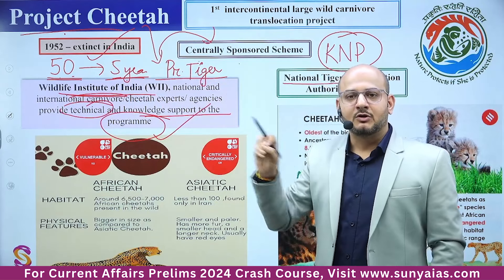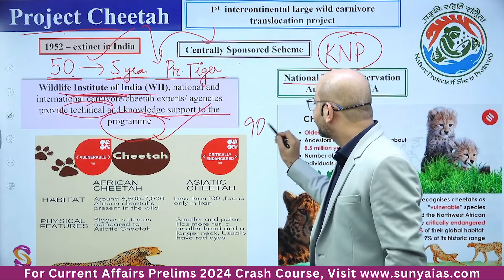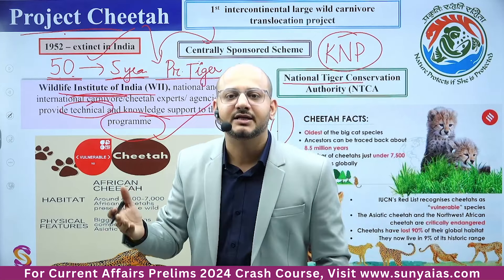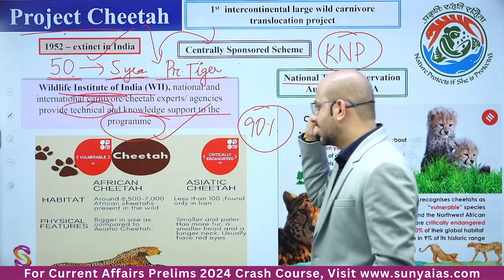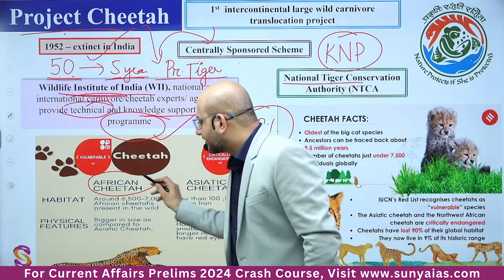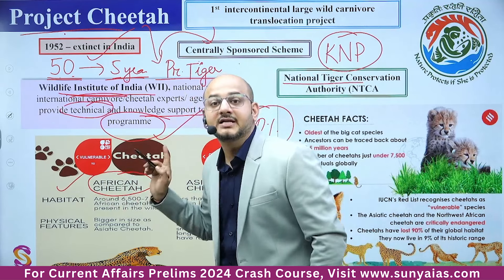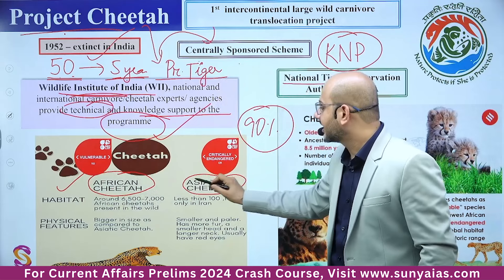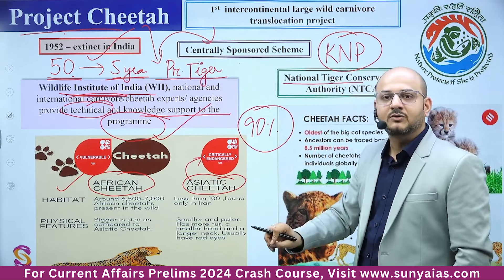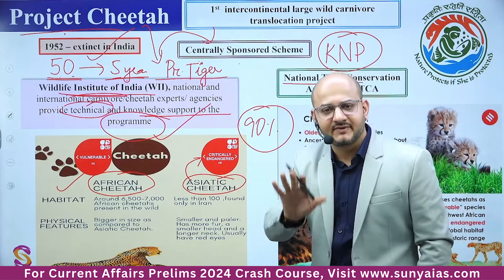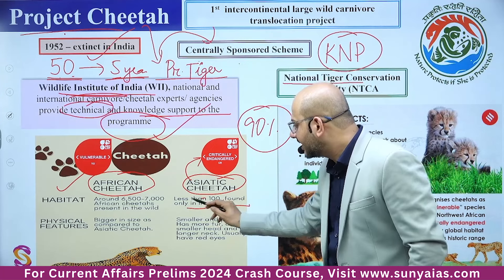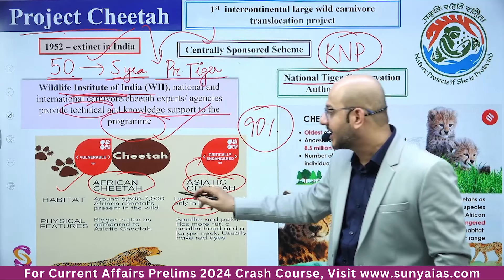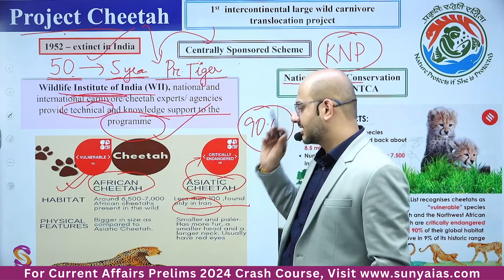Globally, cheetahs have lost more than 90% of their habitat. Students sometimes think all cheetahs are endangered or critically endangered — that is not so. The African cheetah that we are bringing is listed as Vulnerable on the IUCN Red List. Whereas the Asiatic cheetah is Critically Endangered — mostly found only in Iran with less than 100, even less than 50 individuals. We are not bringing Asiatic cheetah; we are bringing African cheetah whose IUCN status is Vulnerable.